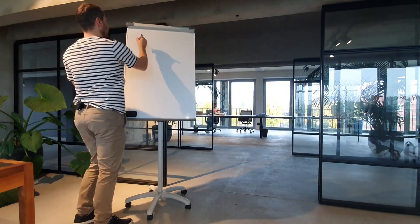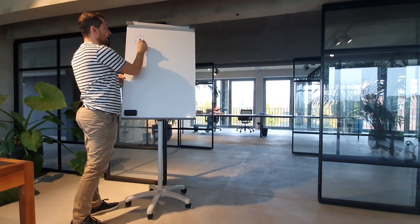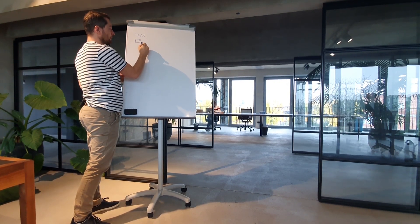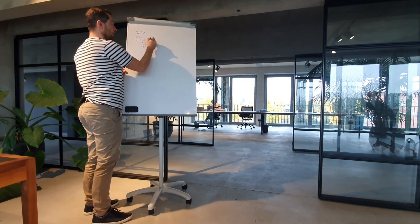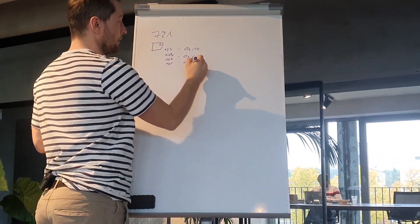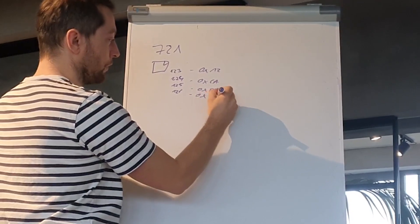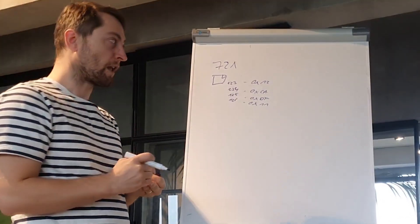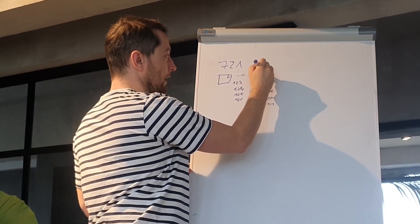The most common NFT standard in Ethereum is ERC-721. ERC-721 is basically a smart contract that has a mapping of IDs — for example 123, 124, 125, 126 — mapped to addresses like 0x12, 0xca, and 0xdf. So basically in 721 we simply map IDs to addresses, and for each ID we can have a JSON document that describes the asset itself.